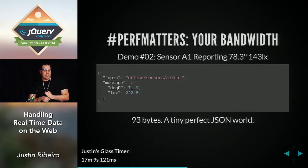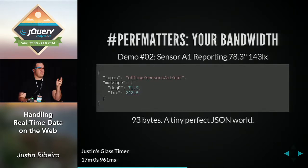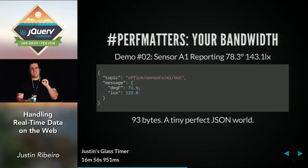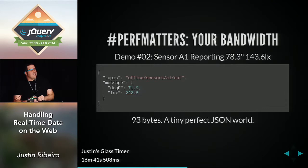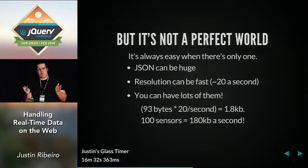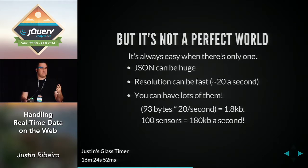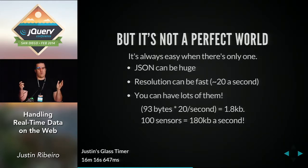Let's talk about performance matters. Here's demo number two — it's reporting temperature at 78, and basically that's a sensor we have running in the office. We're going to say this is a typical message format for that sensor, because I like the M2M Internet of Things experience. That's 93 bytes of a tiny little perfect JSON world. It works great for one thing, but it's not a perfect world. And if you don't communicate with your back end, you find yourself in a world of pain.